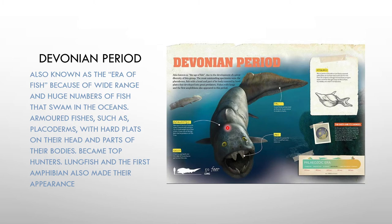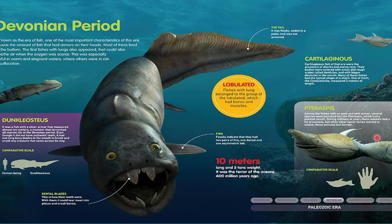Because of the wide range and huge number of fish that swam in the ocean, the Devonian is known as the era of fish. Peteraspis is an armored fish covered with bony plates. Lungfish and amphibians also came in this period. The lungfish is a fish that can live on land for a short period of time. Amphibians are vertebrates that can walk on water as well as land. Peteraspis was very small compared to humans — only about the size of a hand.